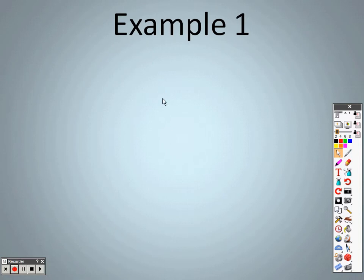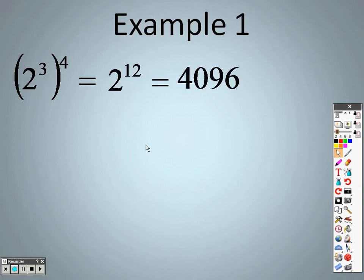So with all those properties in line and in check here, let's take a look at example 1. All you have to do is, because there is parentheses there, I can tell you right off the bat that I know that I'm going to have to multiply those exponents. So 3 times 4 is 12, so I get 2 to the 12th power, which is 4,096.